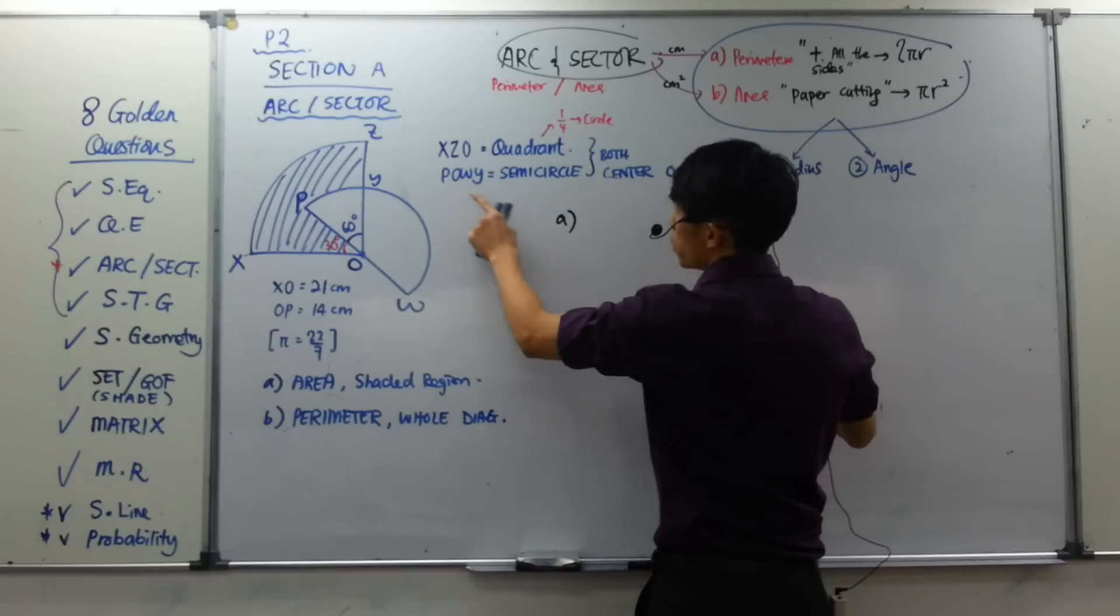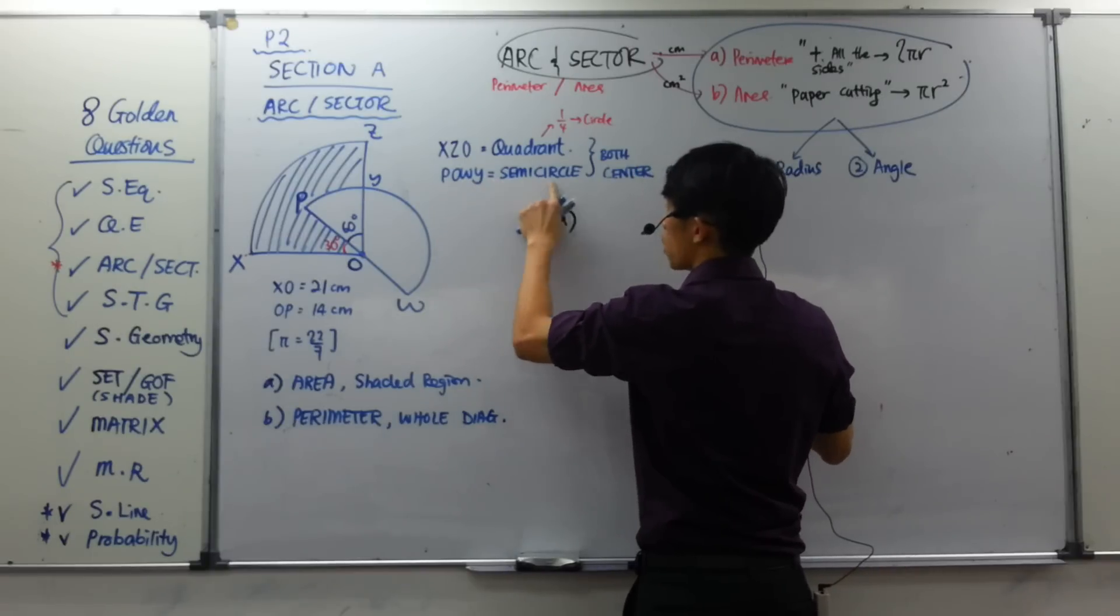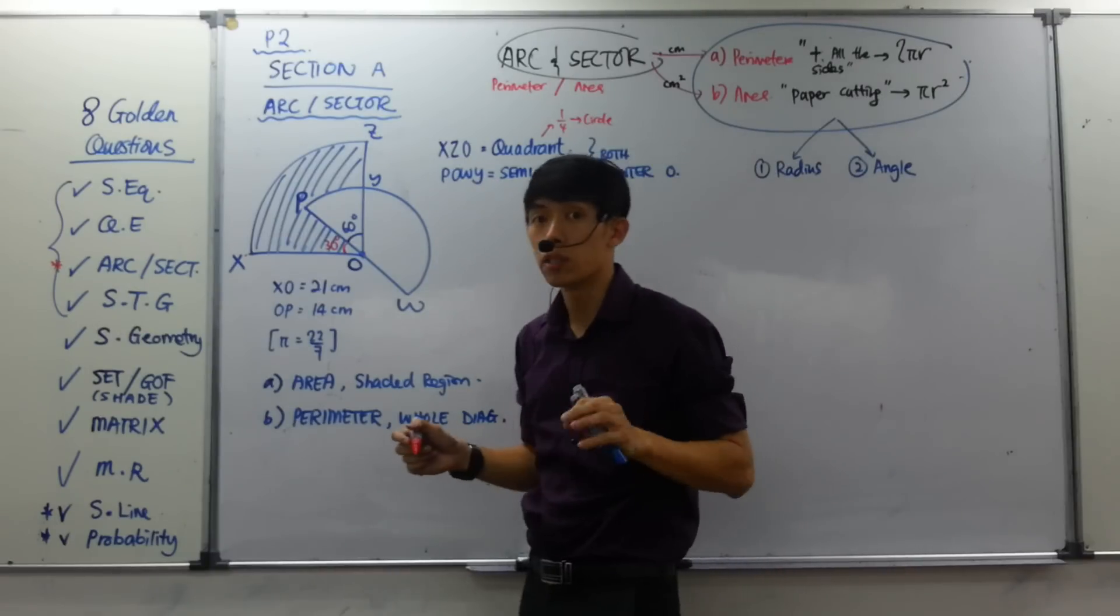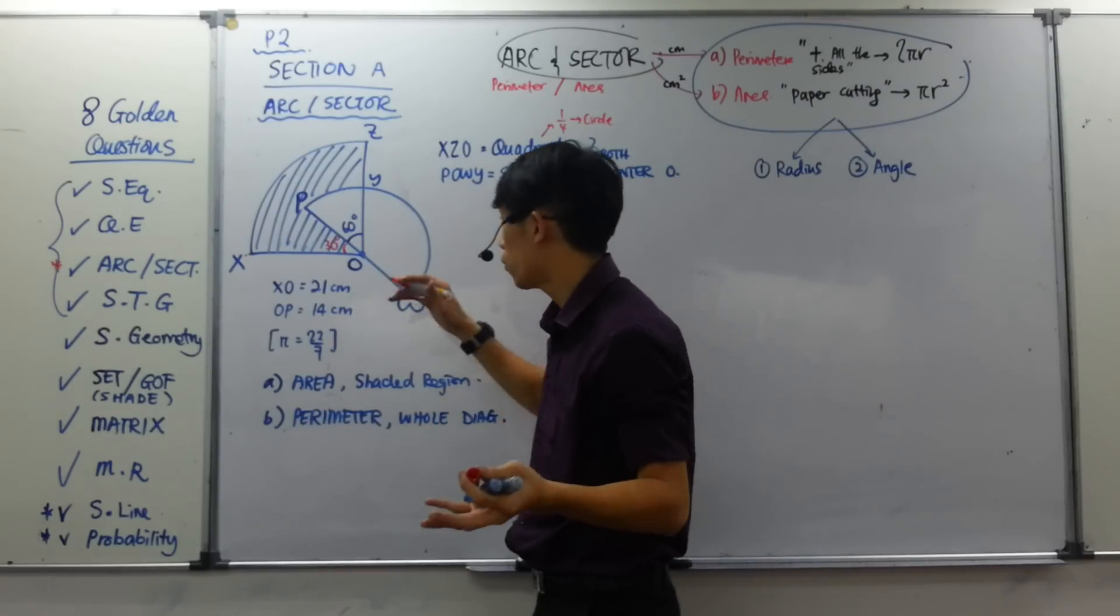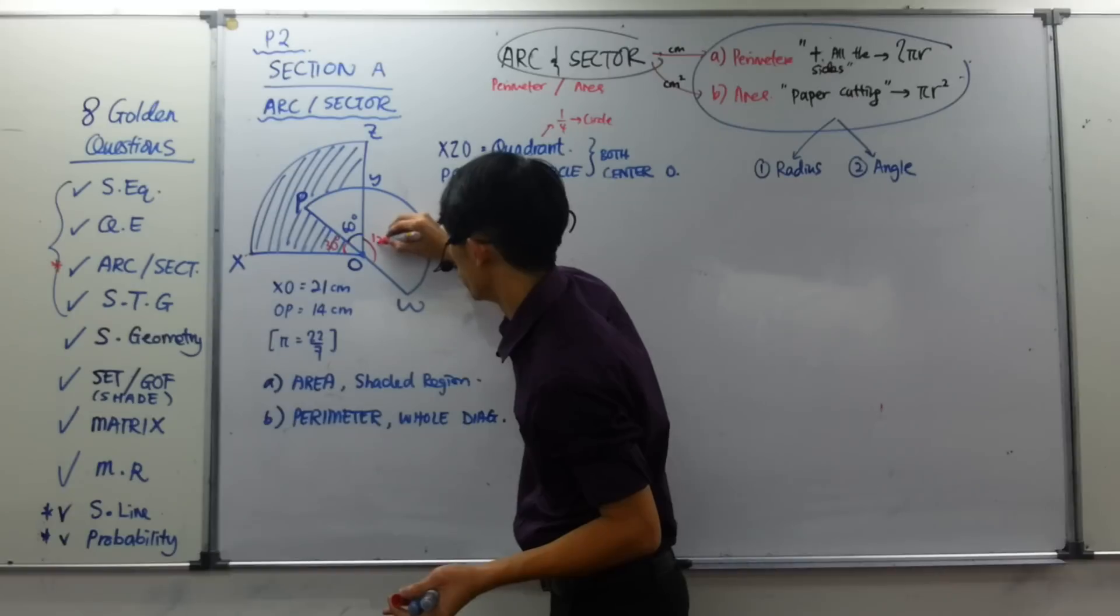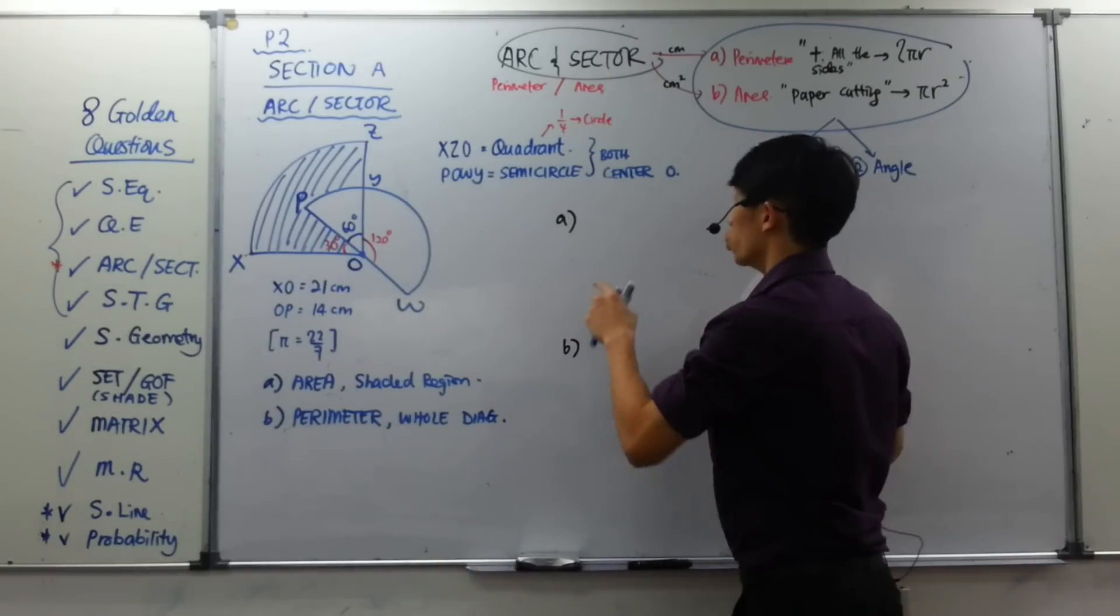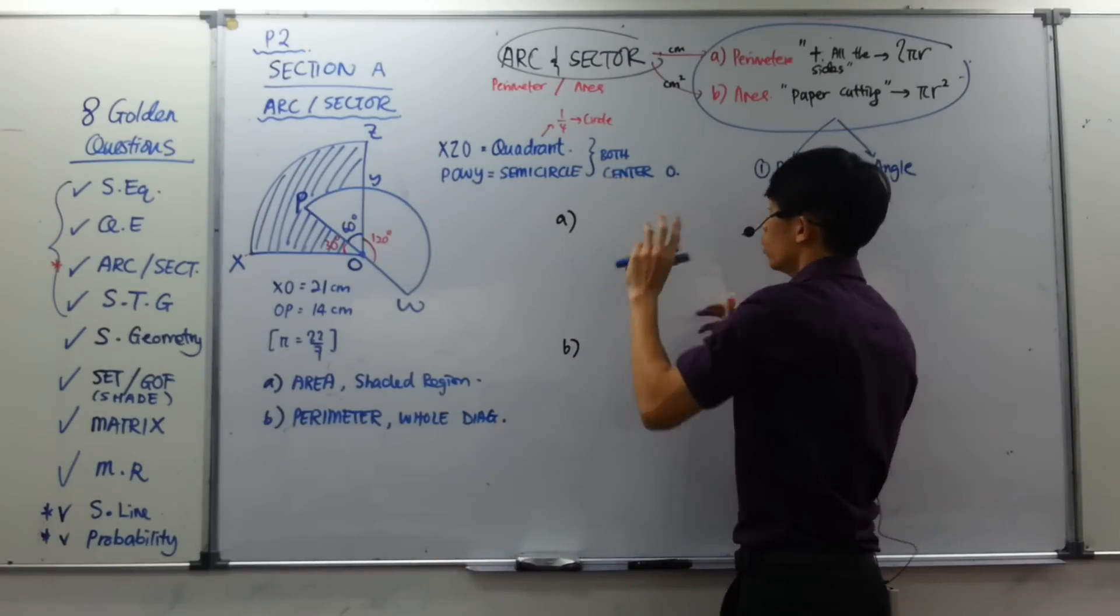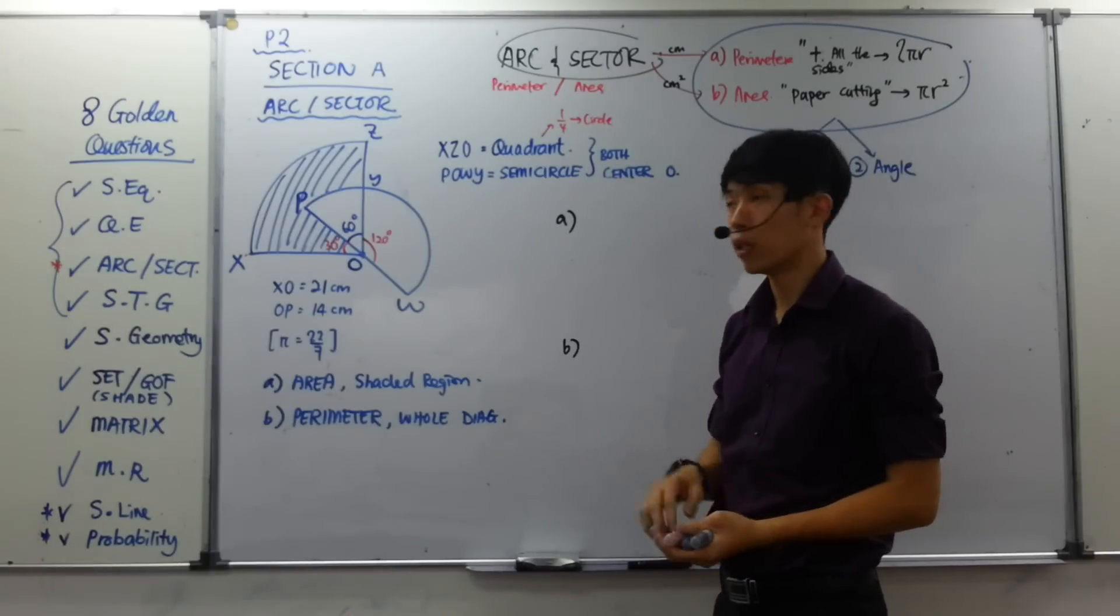Then, what is the meaning of one over four? Or in other words, when you come to XZO, it means 90 degree. If the whole thing is 90 degree, it means the remaining here is 30 here. Next thing. They say POWY is a semicircle. And semicircle we give it as what? Of course, 180, half of a circle. So if this part of it is 60, the remaining here will be 120.